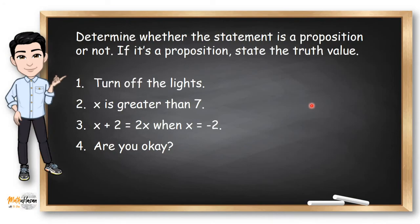Okay, how about we try these examples? Determine whether the statement is a proposition or not. If it's a proposition, state the truth value. Turn off the lights. This is not a proposition because it's not a declarative sentence.